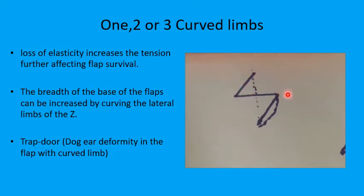And if the elasticity of the tissues is affected in only one part rather than the whole of the surgical field, then you can consider having the curved limb on one or two or all three limbs of the Z-plasty as required.